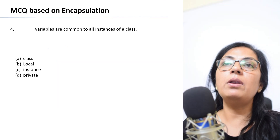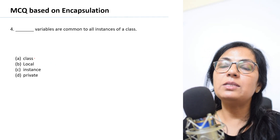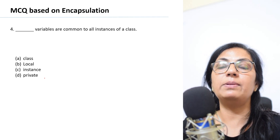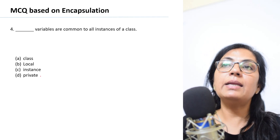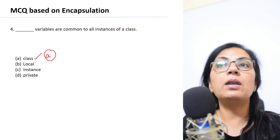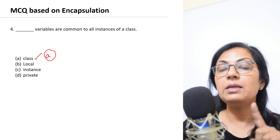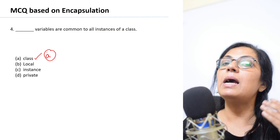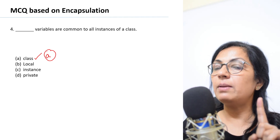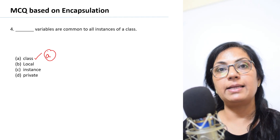Question number four: Blank variables are common to all instances of a class — class variables, local variables, instance variables, or private variables? The correct answer is option A: class variables are common to all instances. Class variables have only one copy, whereas instance variables have a separate copy for each object. Class variables have only one copy shared by all the objects of the class.